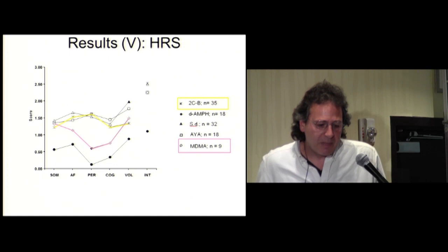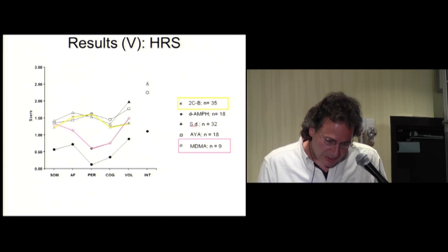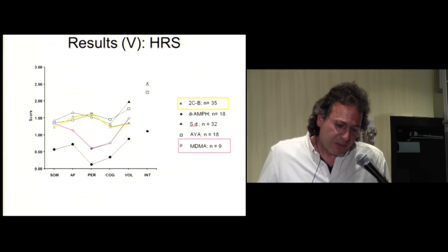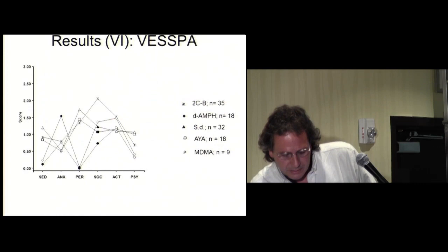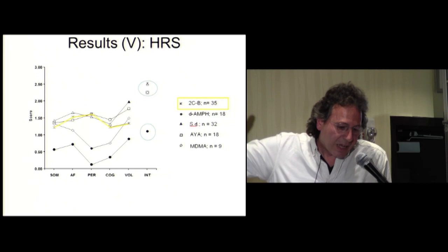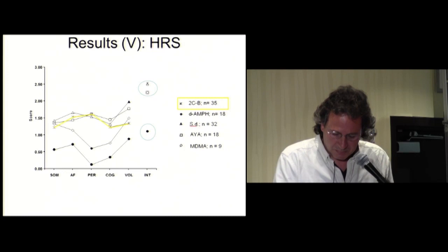At last, regarding MDMA, there is a difference in the Perception subscale of the HRS. And also, although there are no statistical differences, there are different scores in the Cognition subscale. But in the Intensity subscale, all the hallucinogens scored more or less the same, quite different regarding amphetamine.